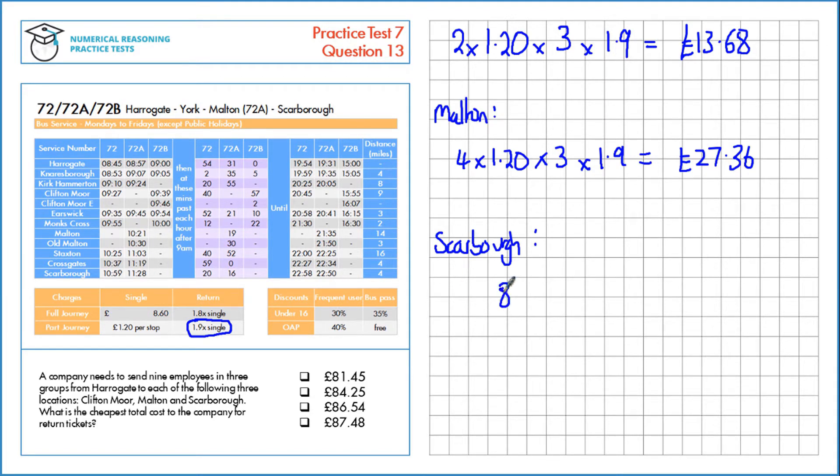We've got £8.60 for three people, and we want the return for the full journey. That's actually a little bit cheaper at 1.8 times the normal price. That gives us £46.44.